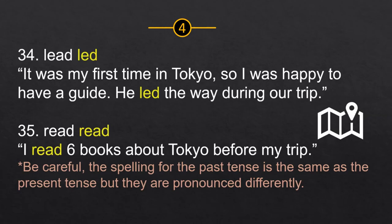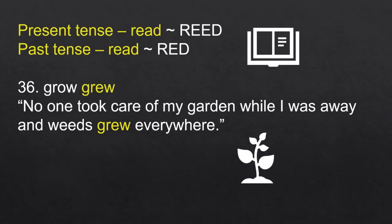Read → read: 'I read six books about Tokyo before my trip.' Note: Be careful — the spelling for the past tense is the same as the present tense, but they are pronounced differently. Present tense is pronounced 'reed'; past tense is pronounced 'red.'